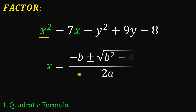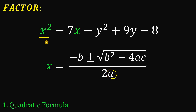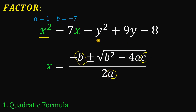The value of x using the quadratic formula is negative b plus or minus square root of b squared minus 4ac, all over 2a. Here, a is the coefficient of x squared, which is 1; b is the coefficient of x, which is negative 7; and c is the constant term, which is negative y squared plus 9y minus 8.